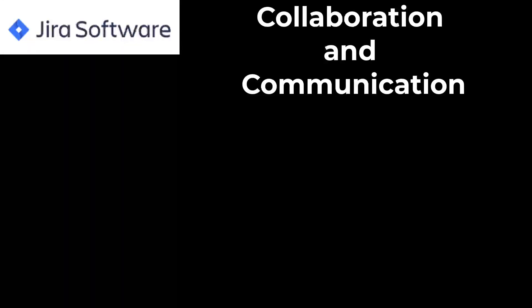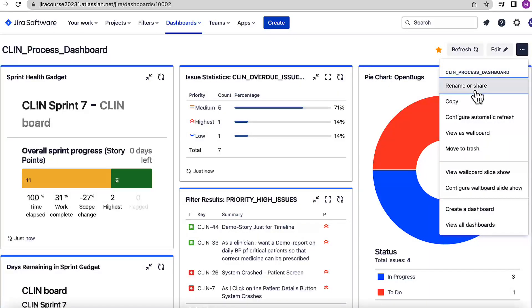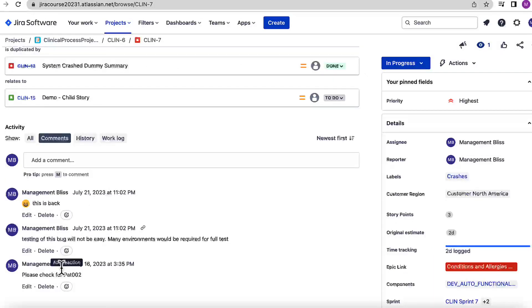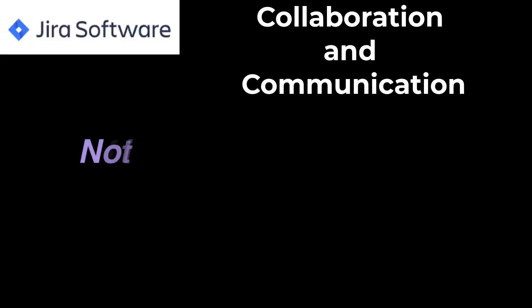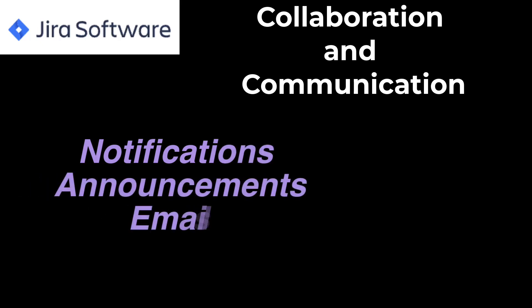The eighth feature is collaboration with Jira. Using Jira, teams can easily collaborate with each other. It's not just about collaboration and communication among the team, but also communicating with all stakeholders using powerful features like sharing filters, sharing boards, sharing dashboards, commenting on issues, and sharing attachments. One can also use notifications to mention other team members and send or receive emails or notifications.